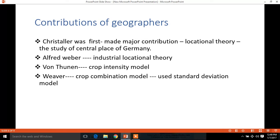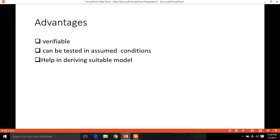Contribution of geographers. Christaller was first, made major contribution in locational theory, the study of central place of Germany. Alfred Weber, industrial location theory. Von Thünen, crop intensity model and Weaver, crop combination model. He used standard deviation model in his model.